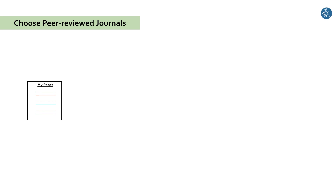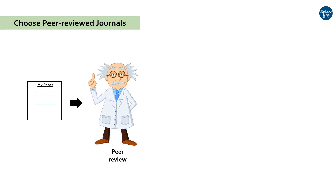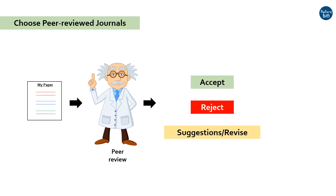Next, you should consider choosing a peer-reviewed journal. Peer-reviewed journals send your paper to be reviewed or checked by competing professors and scientists for its scientific quality, competence, and limitations. Based on this, your paper might be accepted, rejected, or sent back to you for further improvements. Papers in peer-reviewed journals are considered to be scientifically authentic.